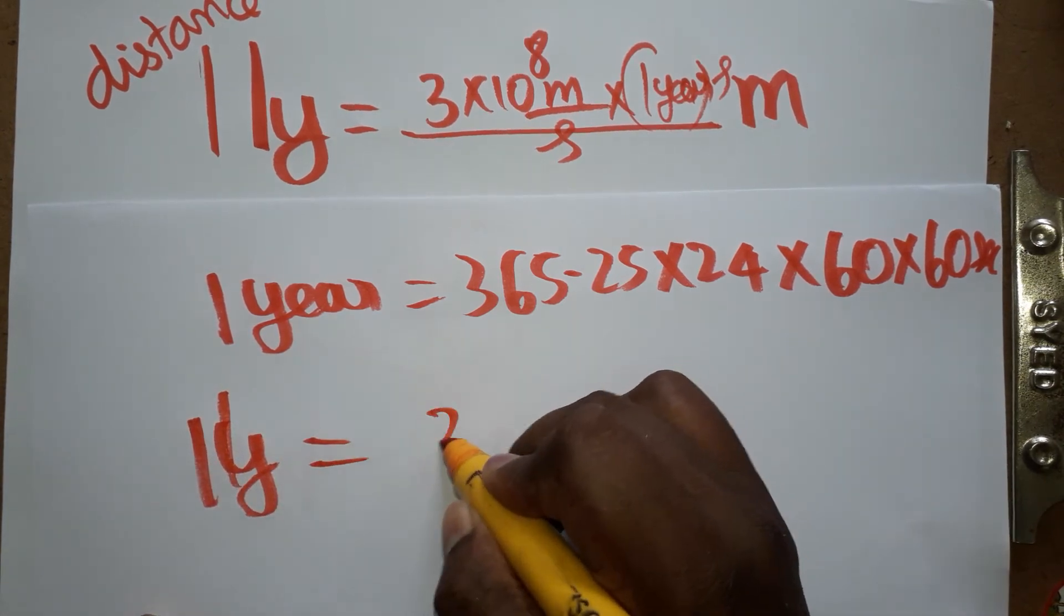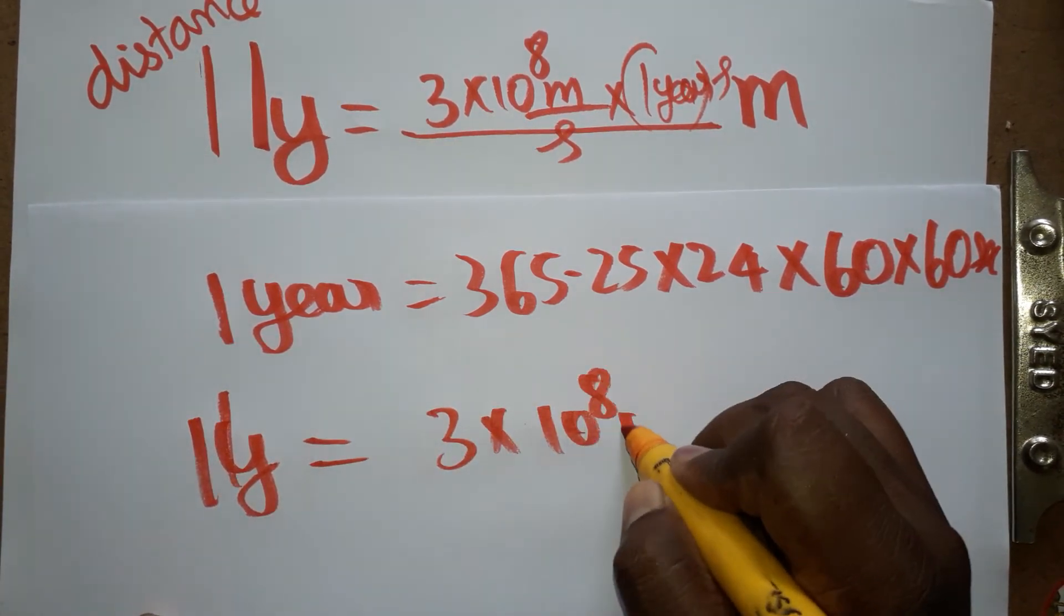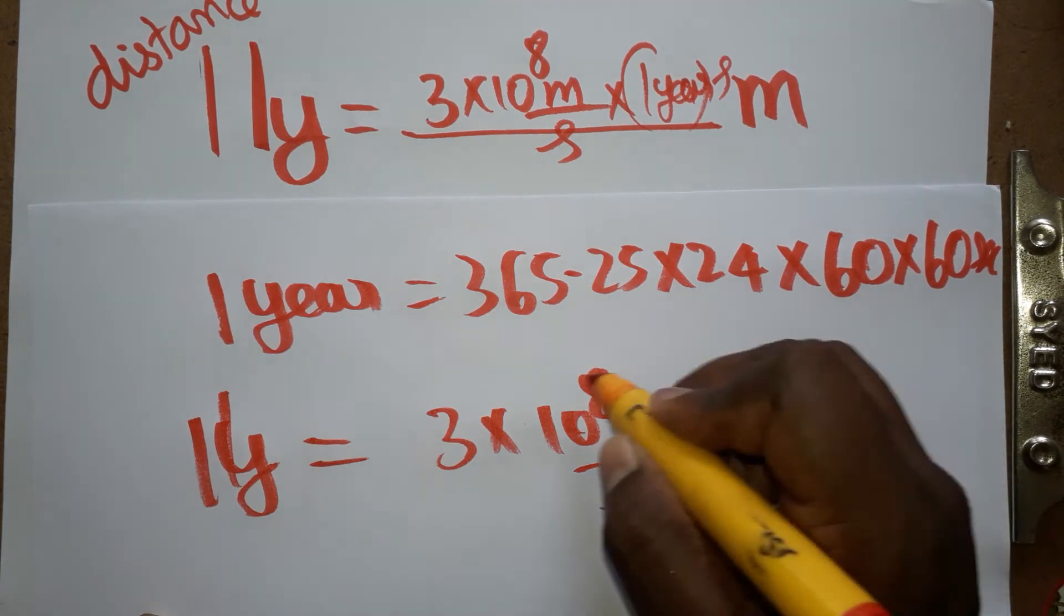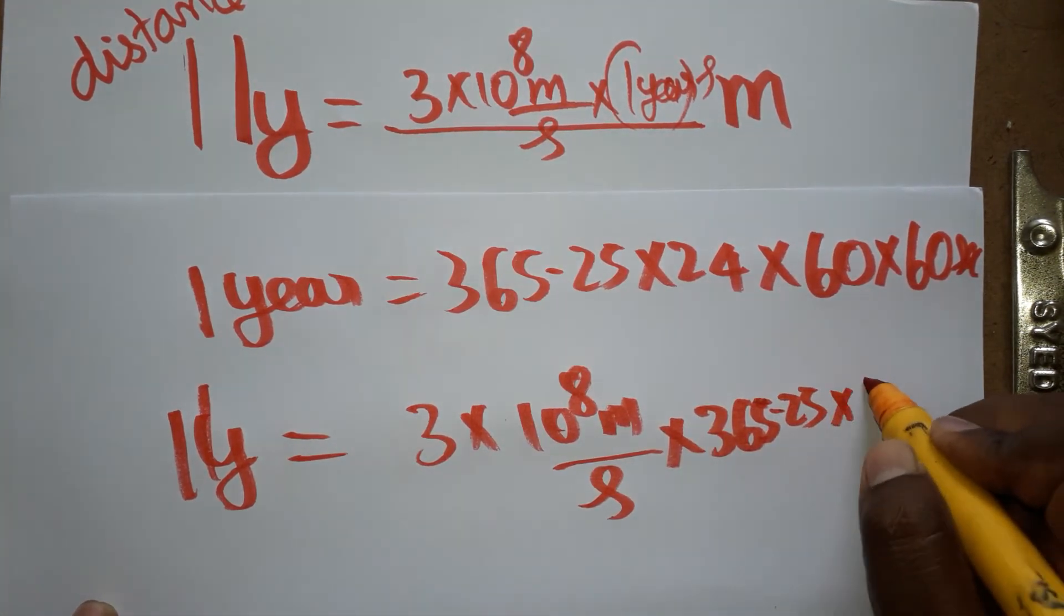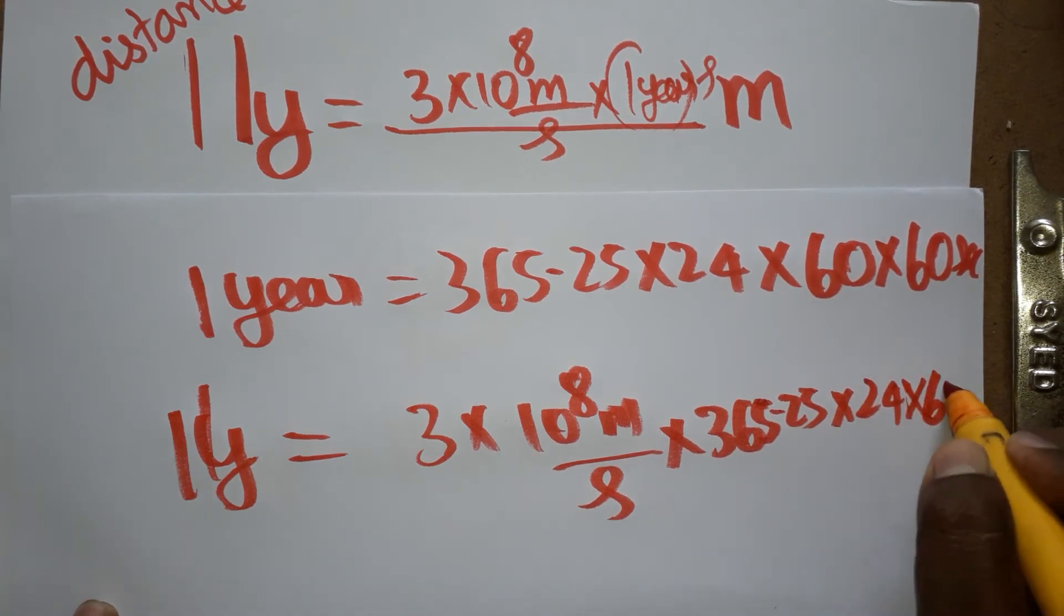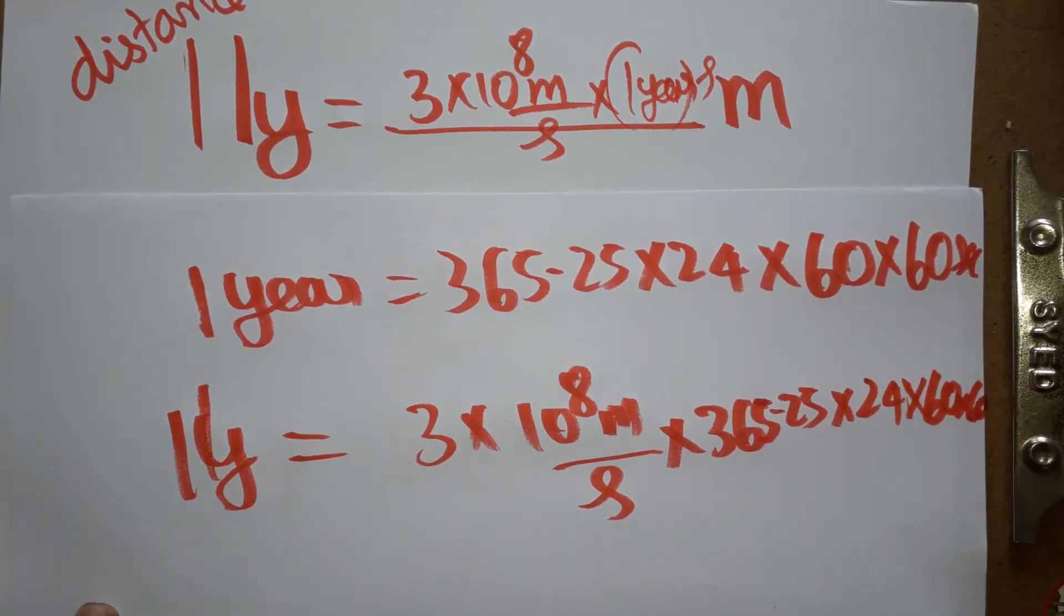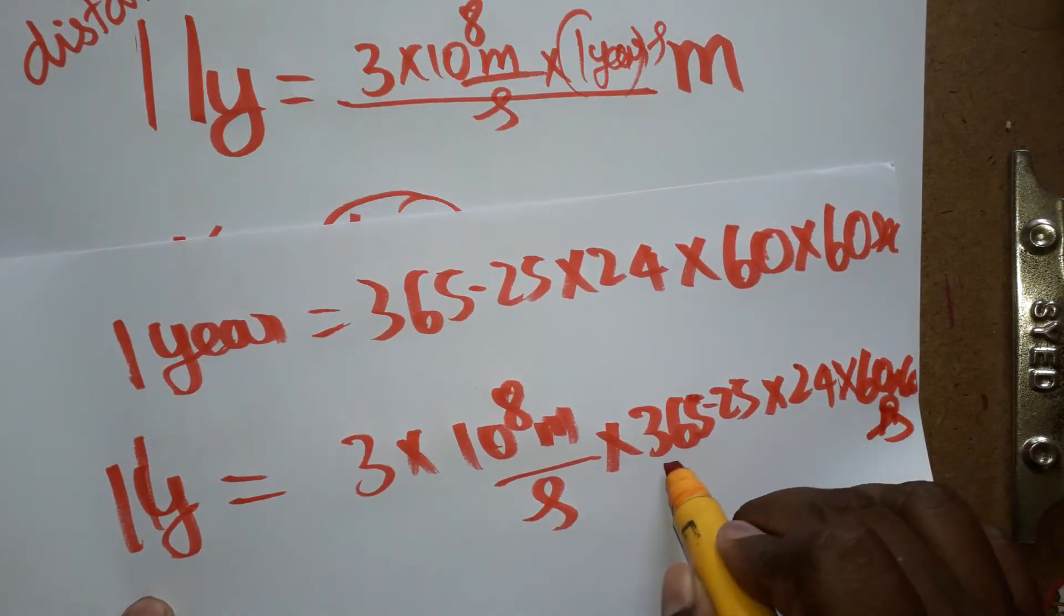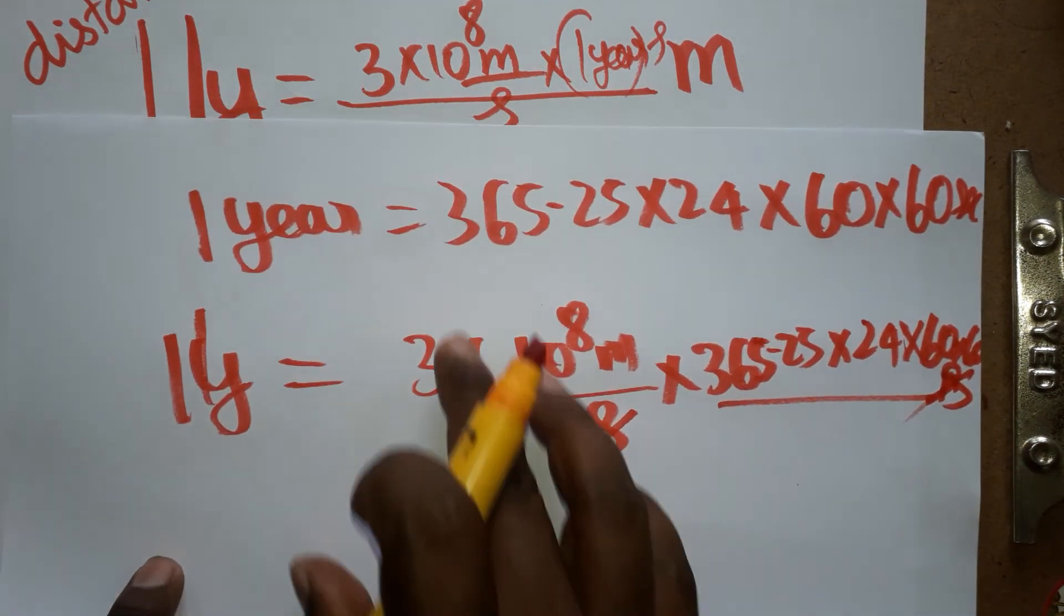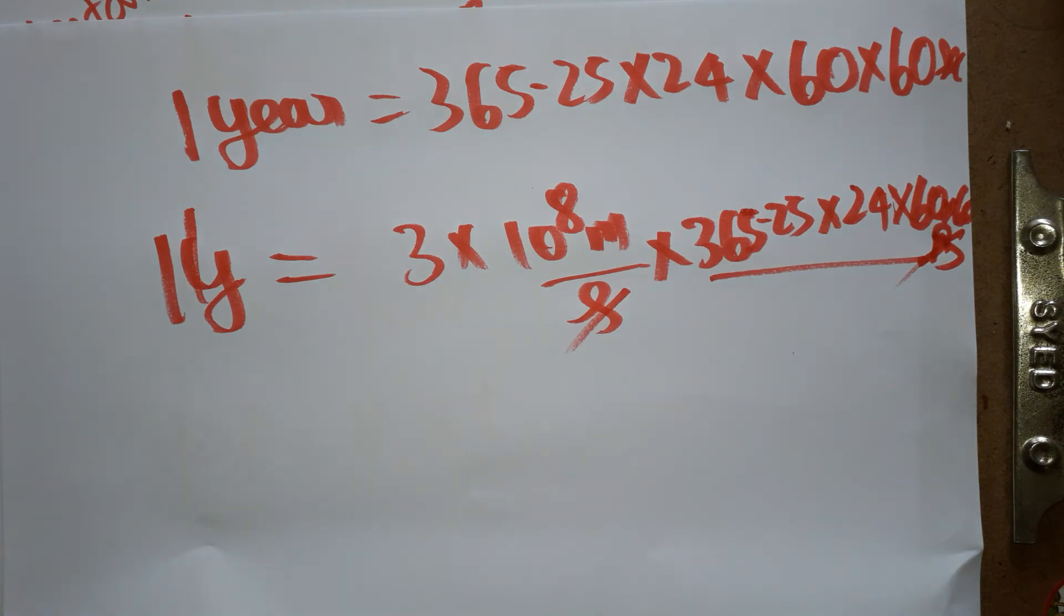One light year is 3×10^8 meters per second times 365.25 times 24 times 60 times 60. This calculation gives us light year. The seconds cancel out, and this whole multiplication gives us the final value.